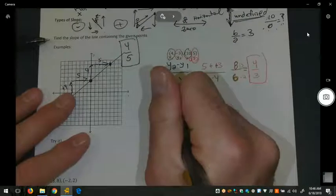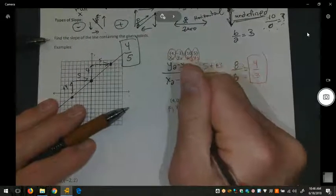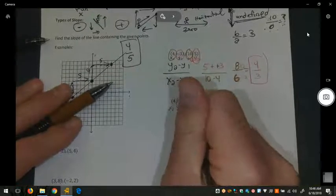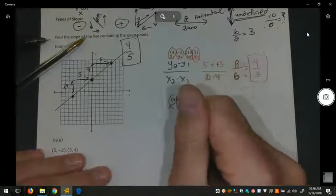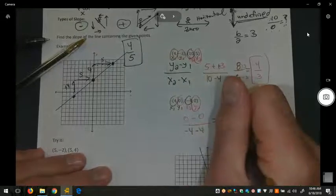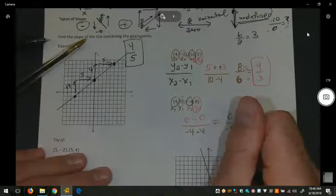For the next one, this is my x sub one, y sub one. The second point is my x sub two, y sub two. So I'm going to subtract my y's first, zero minus zero, then subtract my x's, negative four minus four. In my numerator, zero minus zero is zero. In my denominator, negative four minus four is negative eight.